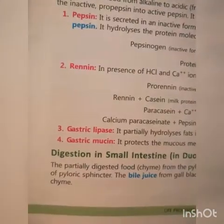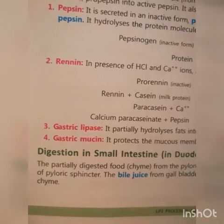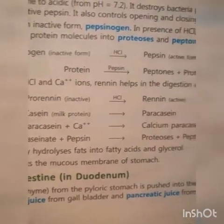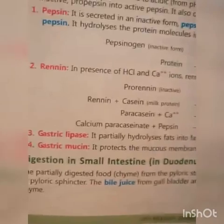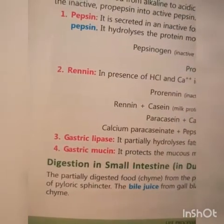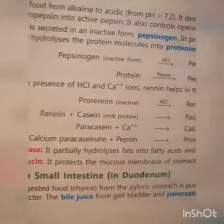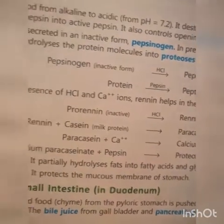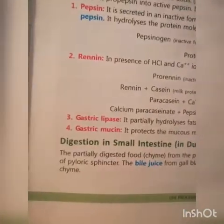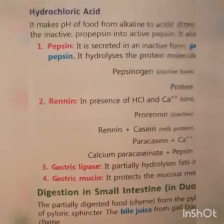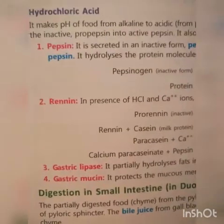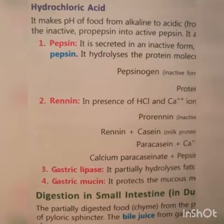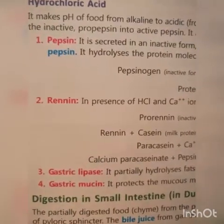Gastric lipase partially hydrolyzes fat into fatty acids and glycerol. Gastric mucin protects the mucous membrane of the stomach. So, in the stomach there is digestion of protein mainly, though some amount of fat also starts digesting.